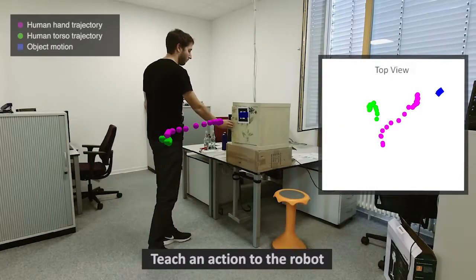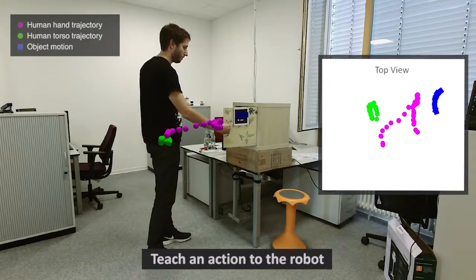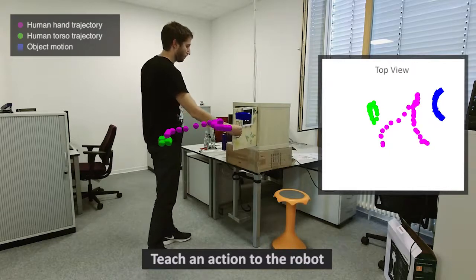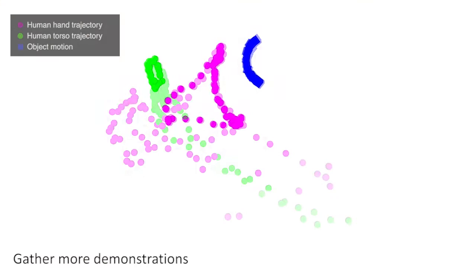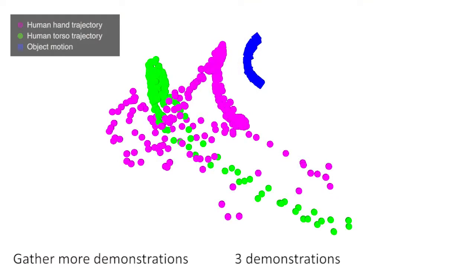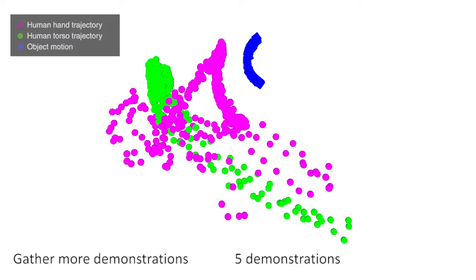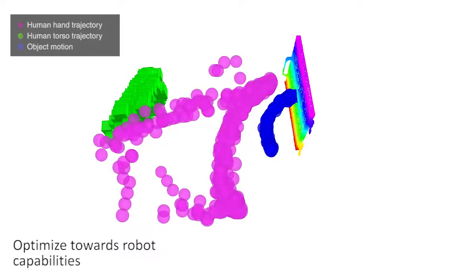Using the proposed human pose estimation and additional object tracking, we then teach actions to the robot. We gather multiple demonstrations for each action and then optimize the recorded data towards robot capabilities, accounting for its kinematics and grasping skills.